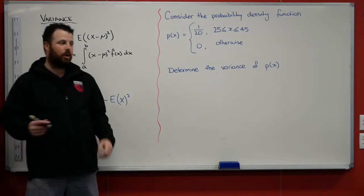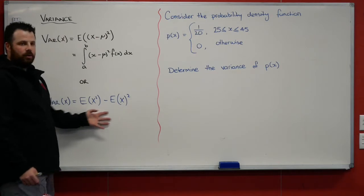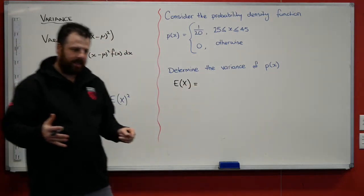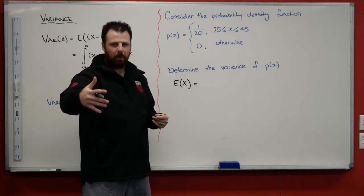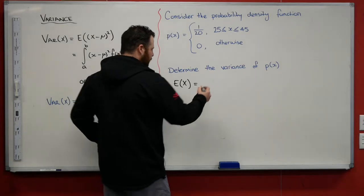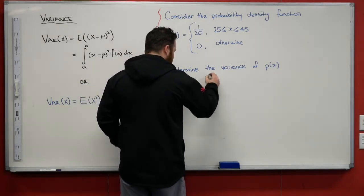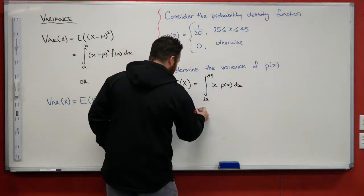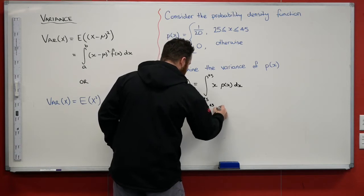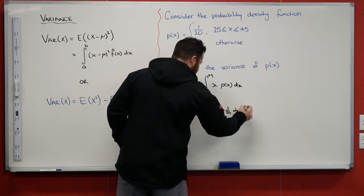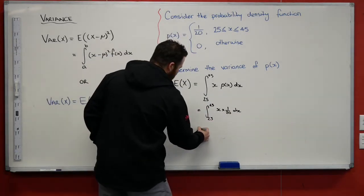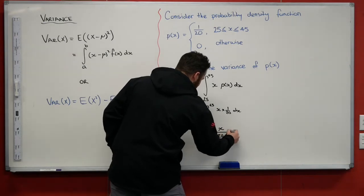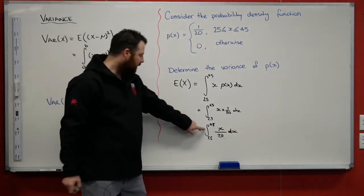Well, before we can determine variance, we need to determine the expected value, because we're going to use this idea of expected value. So remembering the expected value of x is each score multiplied by its probability and sum all those things together. So for a continuous random variable, that is between the boundaries of the score multiplied by its probability with respect to x. So here what we have is x times 1/20 dx, which becomes the integral between 45 and 25 of x/20 dx.